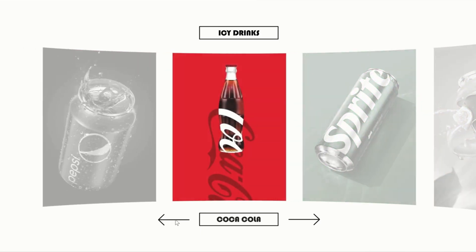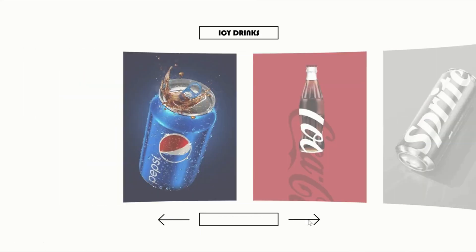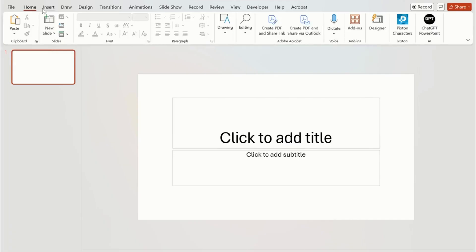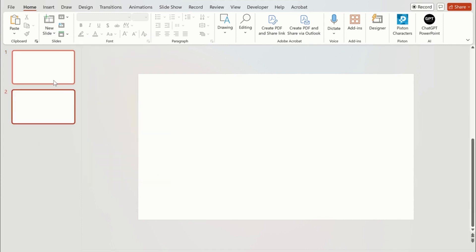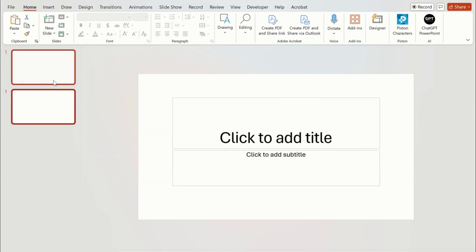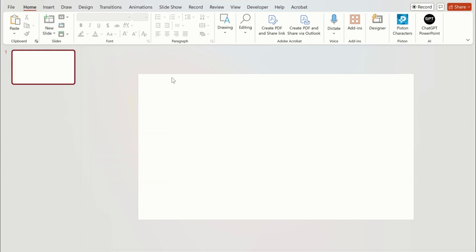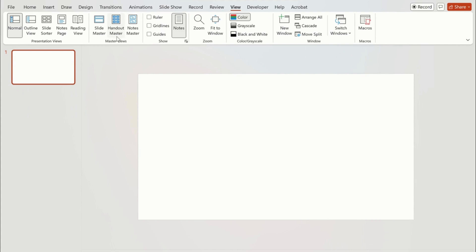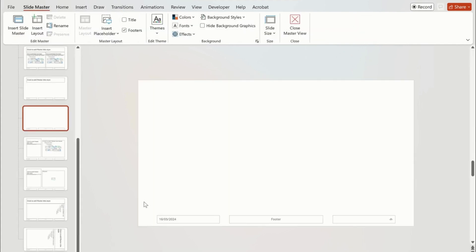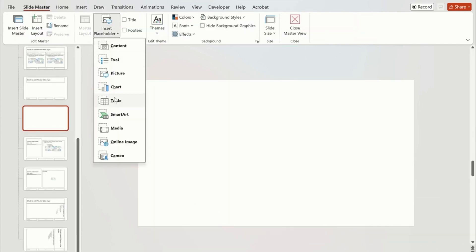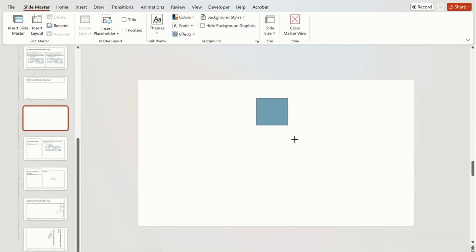Let's get started. First step is to choose a blank layout. To do this, click on the Home tab and from there click New Slide and select Blank. Now click on the View tab, select Slide Master and click on Insert Placeholder, then add a picture.